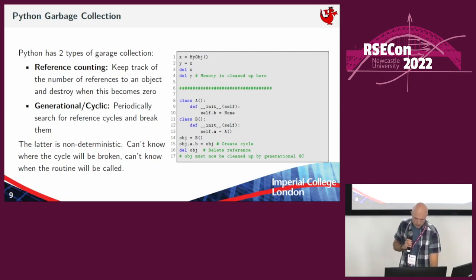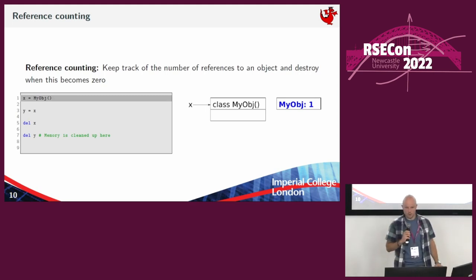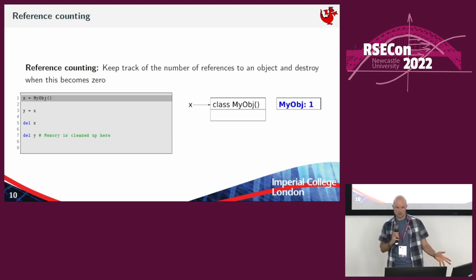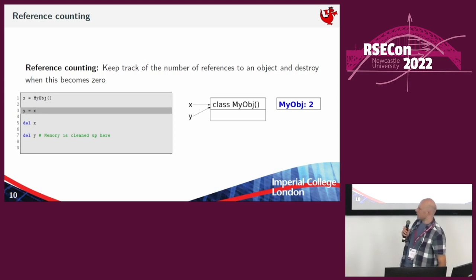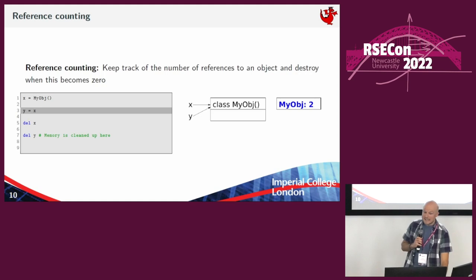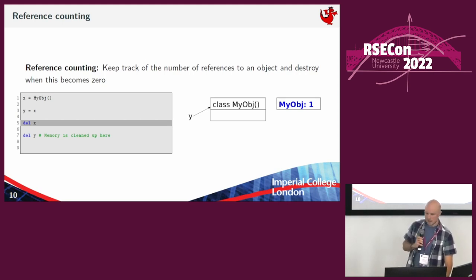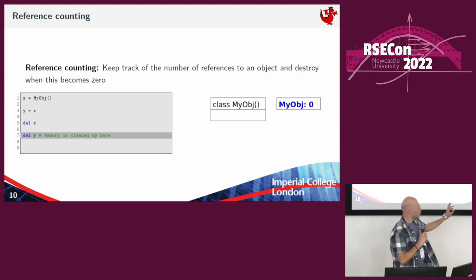Reference counting: we're keeping track of the number of references. In the first line, I'm going to create a reference to my object. In the next line, we create another reference to it, and the reference count goes up by one. If we delete X, the reference count is decremented, but there's still a reference which Y is holding. Then if you finally delete Y, the reference count has gone to zero and Python is free to clean it up.